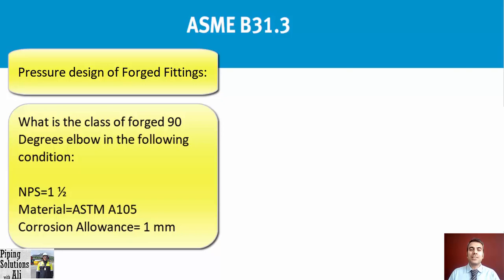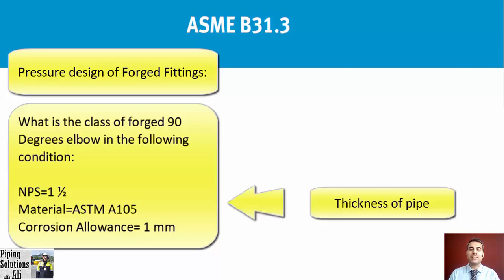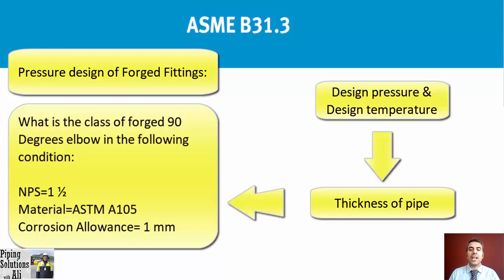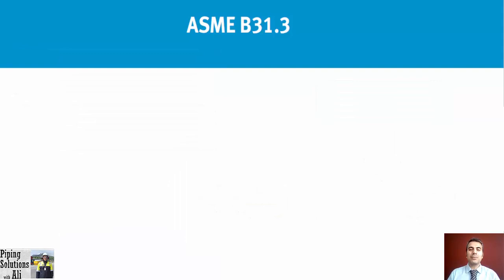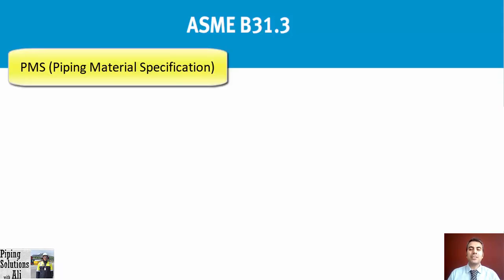You may think that the design pressure and temperature are missing from the mentioned conditions. However, referring to the previous session, please note that the thickness of the pipe connected to forged fittings determines their class based on ASME B16.11. In other words, design pressure and temperature have already been implemented through the wall thickness calculation of the pipe used for determination of forged fittings — there is no need to consider them again.